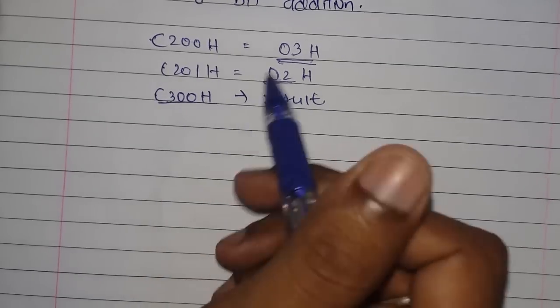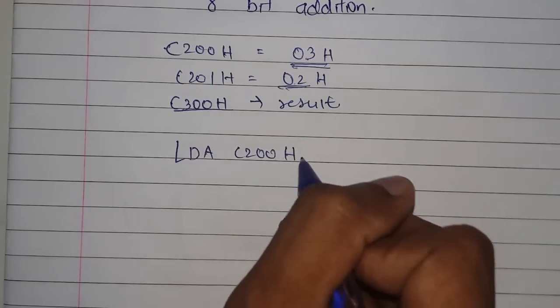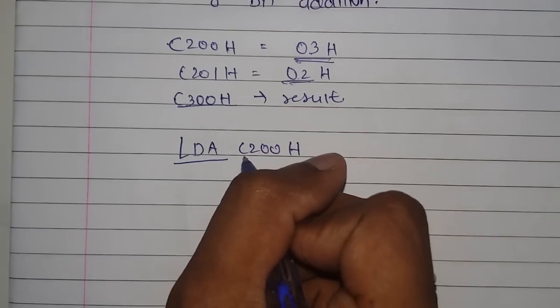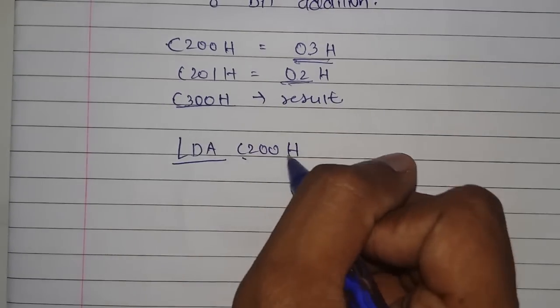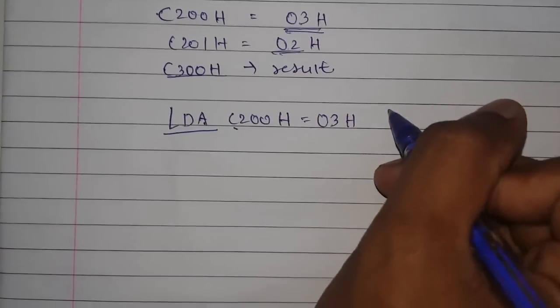First let me load this data into the accumulator using load accumulator direct. Now whatever data is inside this, that is 03H, will be loaded into the accumulator. Now the accumulator has the value 03H.